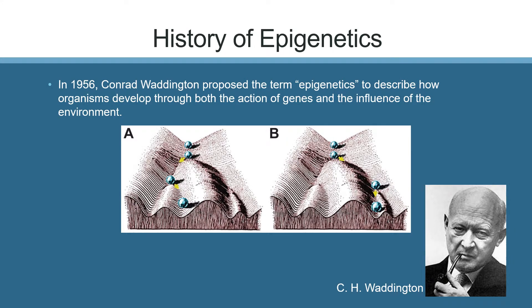In 1956, Conrad Waddington proposed the term epigenetics to describe how organisms develop through both the action of genes and the influence of the environment. Waddington conducted experiments demonstrating that heat shock or exposure to ether in early stages of development could result in reproducible changes in the developmental morphology of fruit flies, passed down to subsequent generations. He called this process genetic assimilation, proposing it resulted from both environmental modification of the genome as well as the genomic sequence itself.